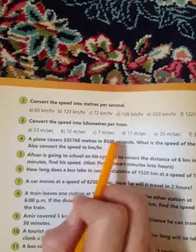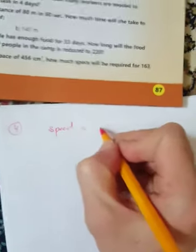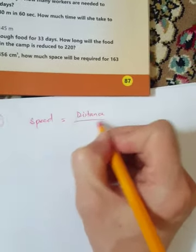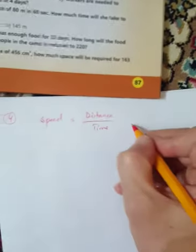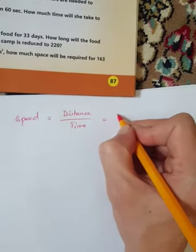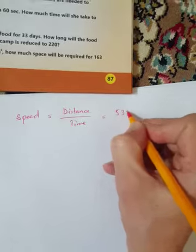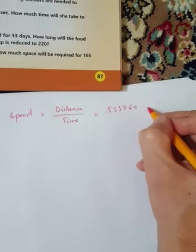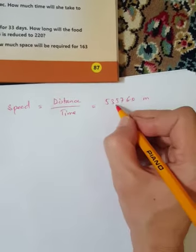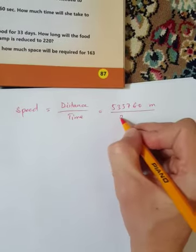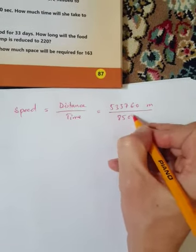For question number four, we know the formula: speed equals distance divided by time. The distance covered is 53,760 meters. The time is 8,500 seconds.